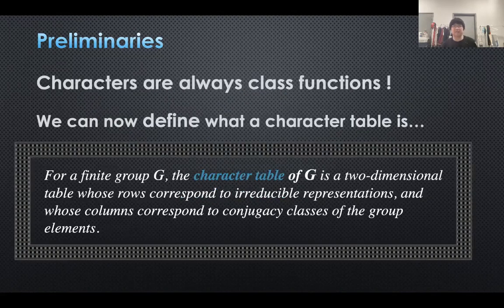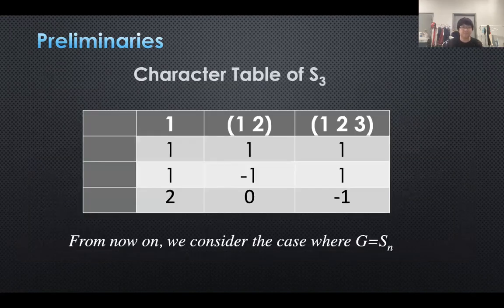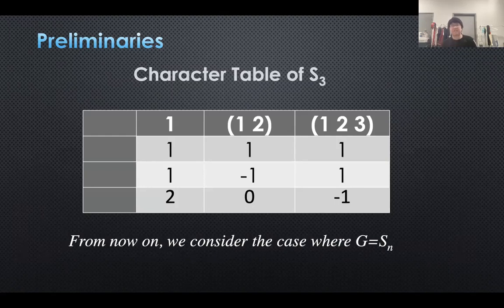What's so good about the character is that it is always a class function — it is always constant on conjugacy classes. With this property, we can define what a character table is. For a finite group G, the character table is a two-dimensional table whose rows correspond to irreducible representations and whose columns correspond to conjugacy classes. Here is an example: the character table of the symmetric group S3. From now on, we consider the case where G is Sn.